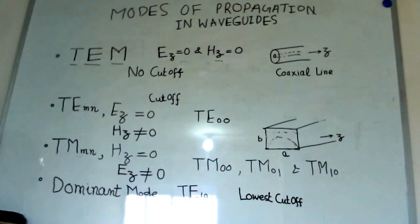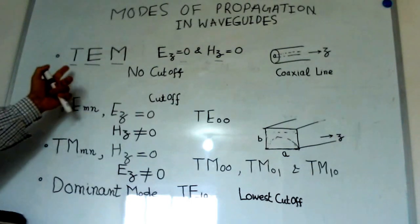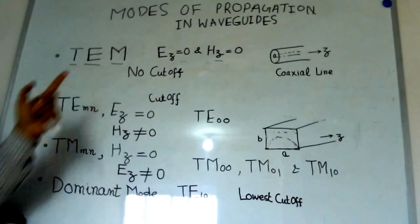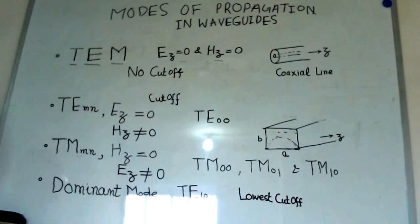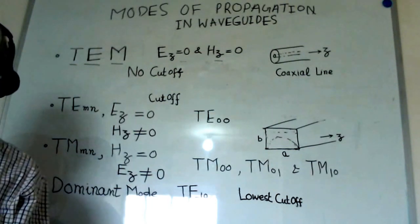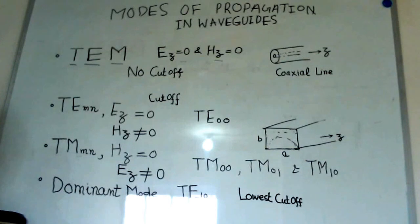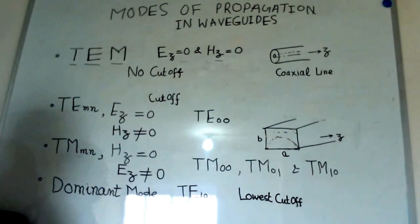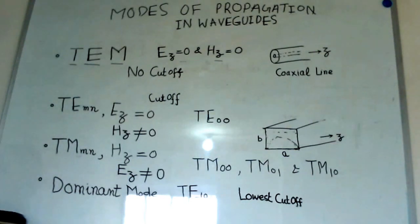Such kind of transmission structures which have Ez and Hz zero are the structures supporting TEM mode. Please note that this mode of propagation does not have any cutoff. That means all frequencies can be transmitted through this structure.